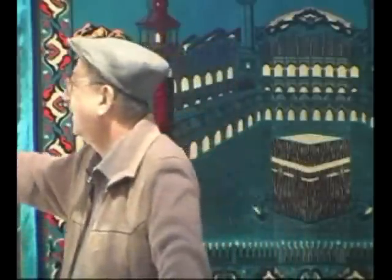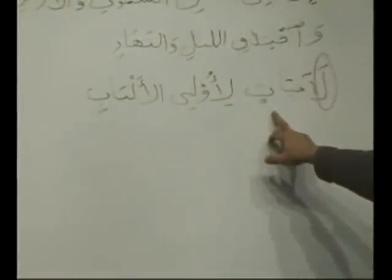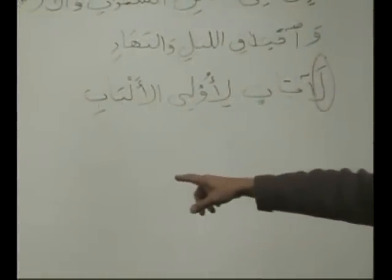Truly, in the creation of heavens and earth — when you talk about heavens, talk about the sun, the moon, the solar system, the lunar system, everything. In the creation of that and the changing, or in the separation, of day and night. What is there? La-ayatin. Ayatin. This is not majroor — ayatin. Why? Jama monasalim.